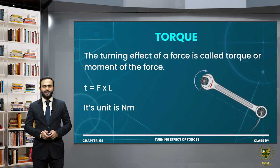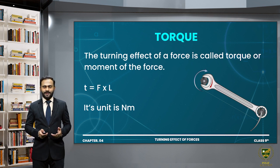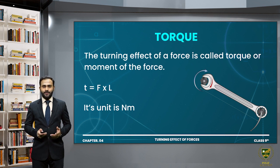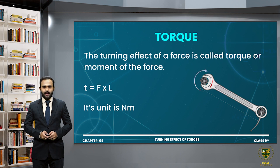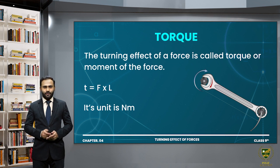The next term is torque. Torque is the turning effect of a force — we call it turning effect. The turning effect of a force is called torque. Its formula is: torque equals F multiplied by L, that is force multiplied by moment arm. Its unit is Newton meter.